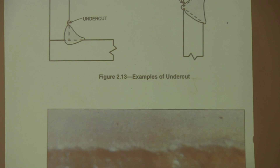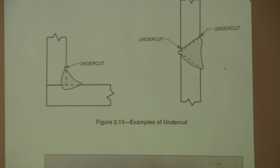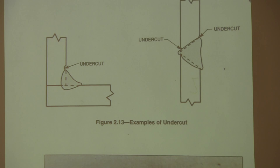Undercut is something that comes up a lot. When making a fillet weld or groove weld, you often melt some of the base metal and it doesn't get filled back up with weld metal along the edges. That can be controlled by the welder's technique, but the code is very specific on the allowable amounts of undercut — how deep it can be.